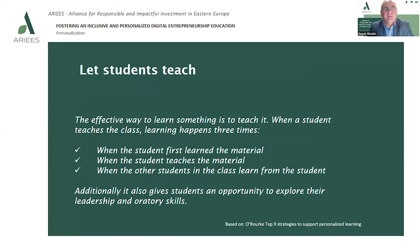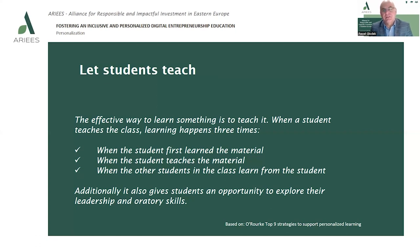Finally, the last tip is to let students teach. It's quite difficult, of course, but it's a very effective way to learn something — simply to teach it. When a student teaches the class, learning might happen in three dimensions: when the student first learns the material, when the student teaches the material, and when other students in the class learn from that student. It really gives students a huge opportunity to explore their leadership, oratory, social, and communication skills, creating an opportunity to learn across many different dimensions.